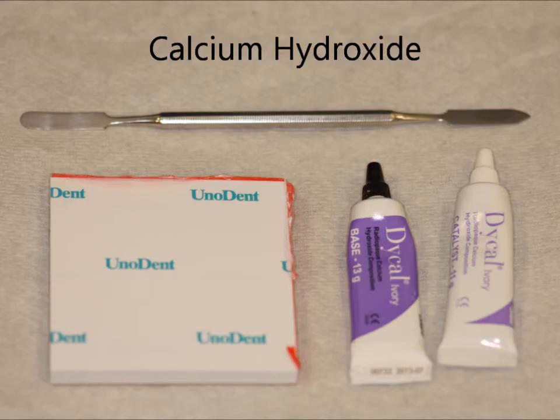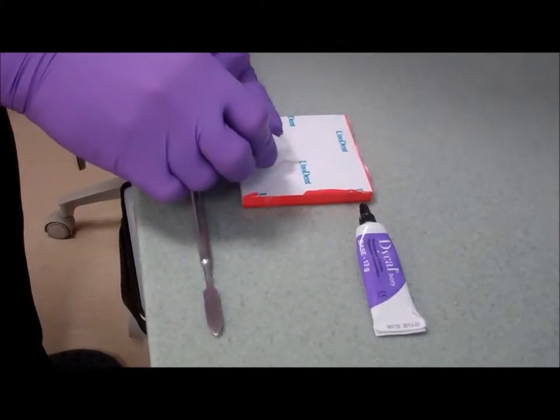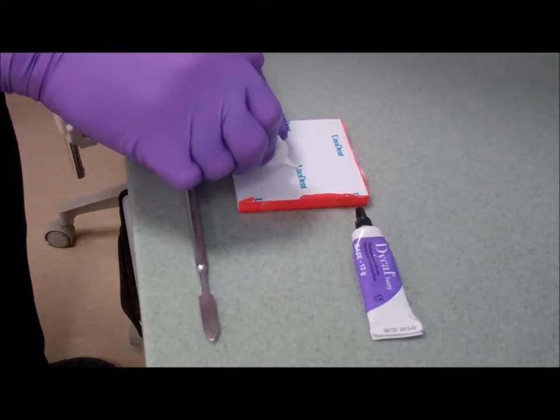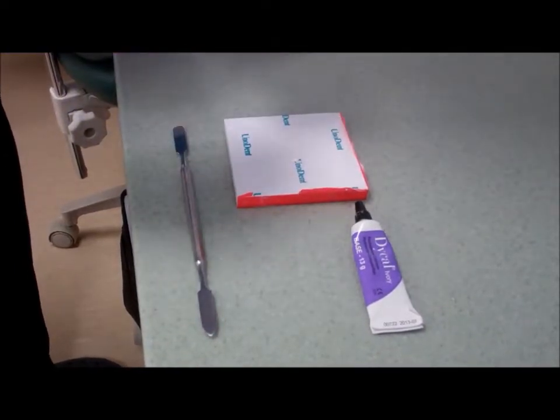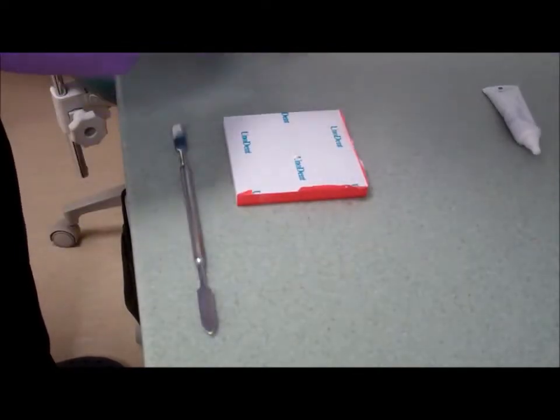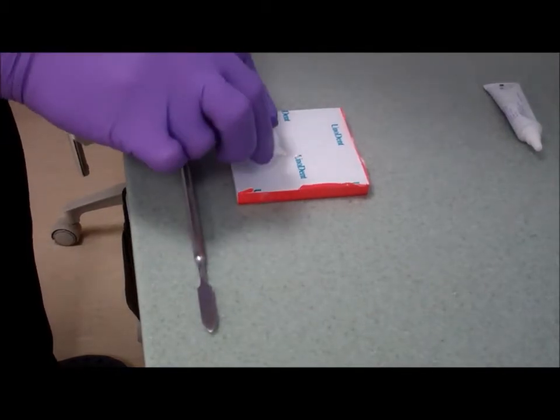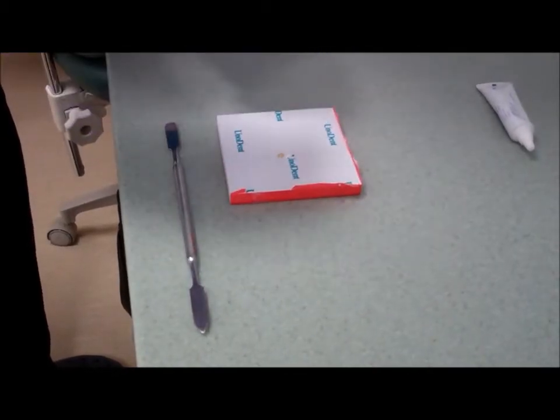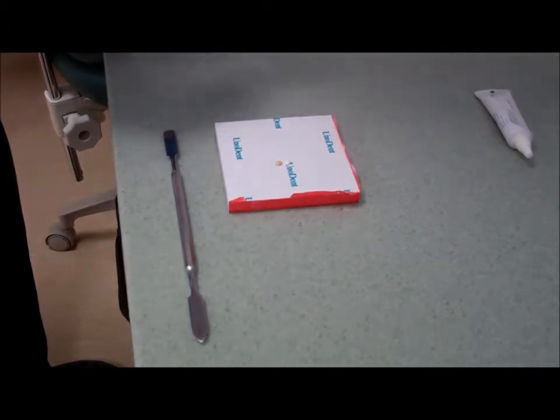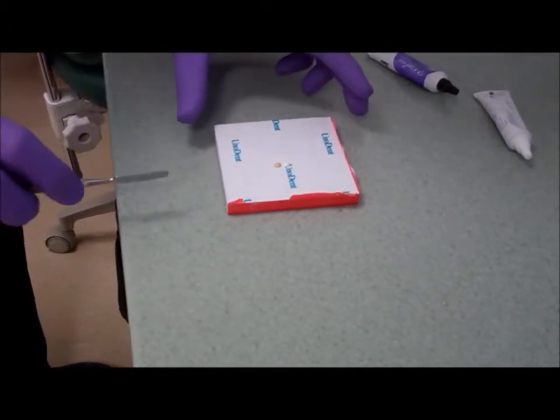Calcium hydroxide is a lining material used for direct and indirect pulp capping. It comes in two tubes, a base and a catalyst. Take a small amount of each, equal amounts from the tube. They're different colors, and then you can just use your spatula to mix them together on the paper pad until they're an even color.